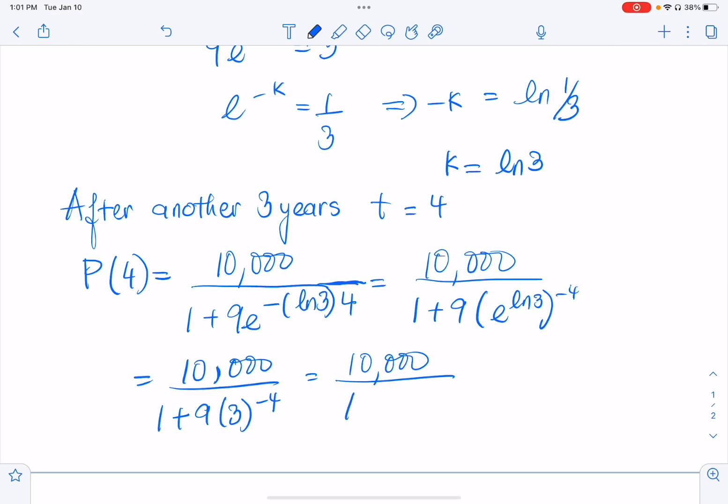So this one should be 1 plus 1 over 9 times 3 to the 4, which is 10 over 9 times 3 to the 4. Actually, we don't need to use a calculator. So 10,000 over 10 over 81, that's just 9,000. So here's the answer.